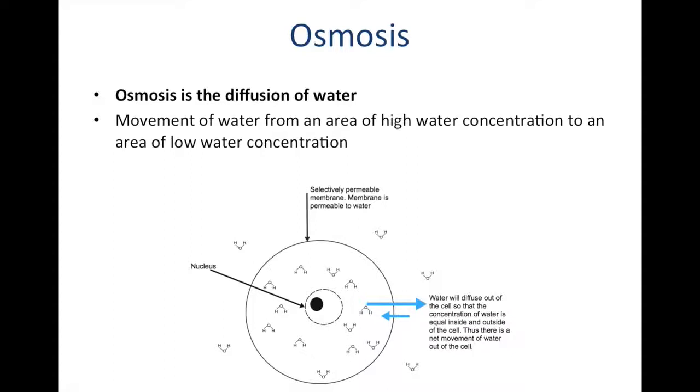In this example here we can see that inside the cell we have a higher number of water molecules than outside of the cell. This means that there is a concentration gradient in which water will move from the inside of the cell to the outside until the water concentrations are equal on both sides of the cell. This is a passive process because water is moving down its concentration gradient.